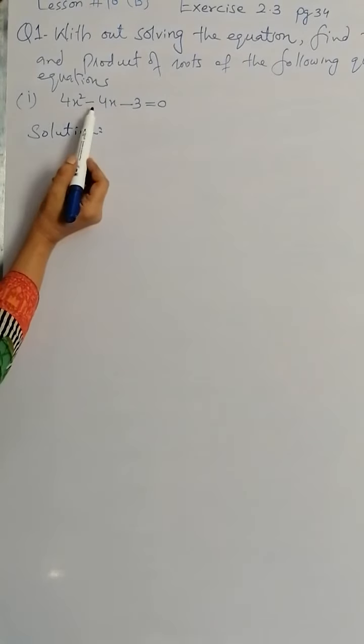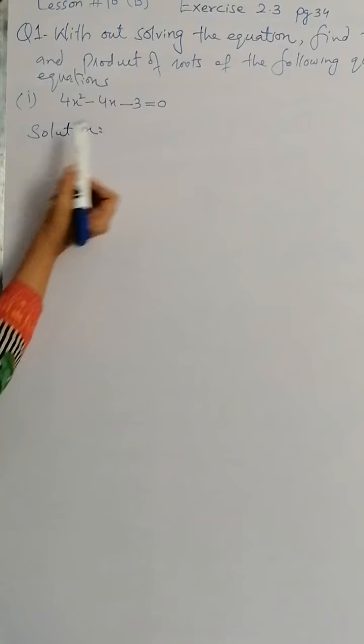Here is the first part of the question: 4x² minus 4x minus 3 equals 0.